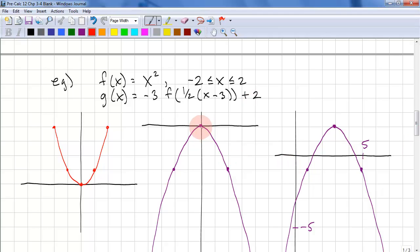So we take this point, move right 3 and up 2. So that's right 3 and up 2. This one goes right 3 and up 2. So that's here. Right 3 and up 2. So that's here.